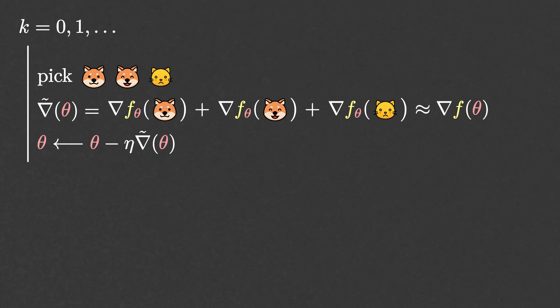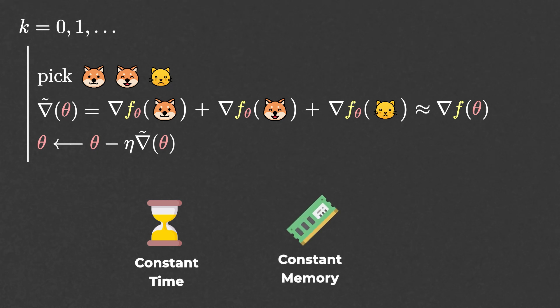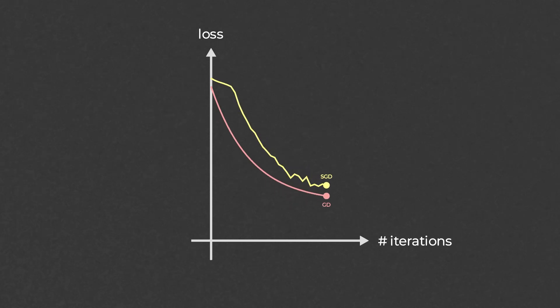With this approach, not only is the time per iteration basically a constant, the memory needed to compute the gradient is also a constant. So, while each iteration of the stochastic version of gradient descent is less accurate than that of the vanilla version, the fact that each iteration is cheap allows us to do more of them.